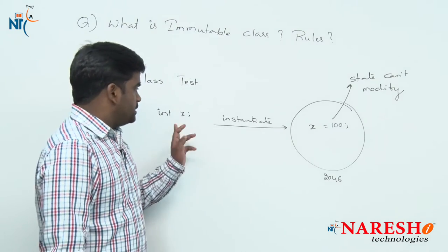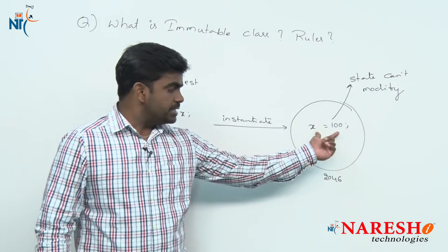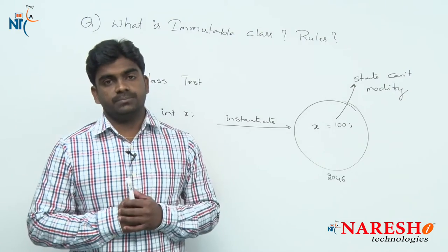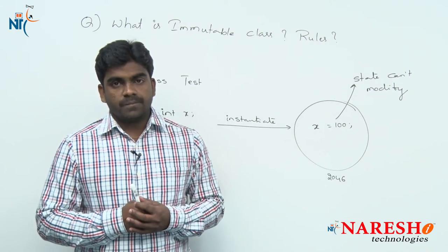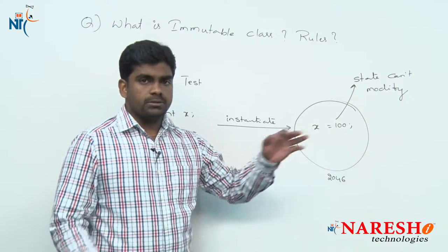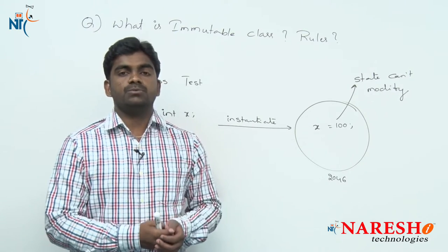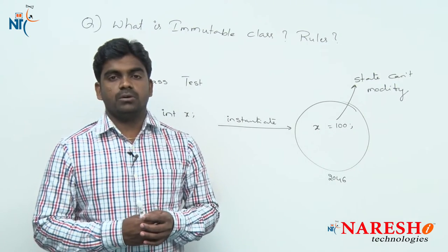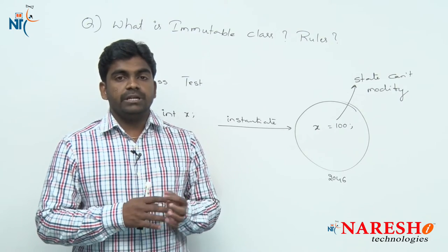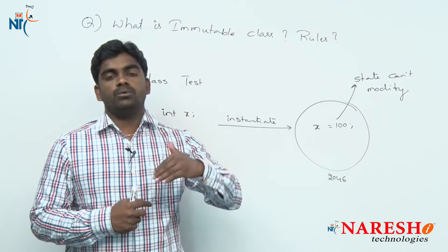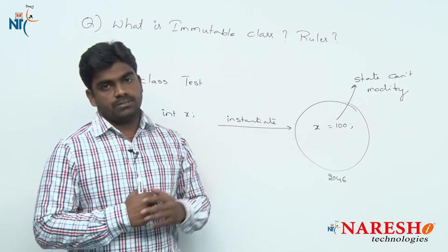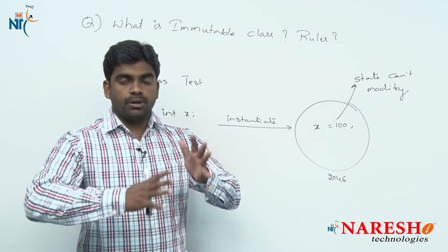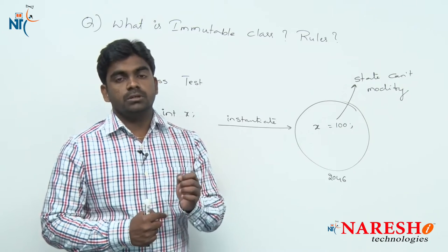Once an object has been created, the state — meaning property values, nothing but variable values — cannot be changed; it is fixed. So how can we control this? Generally a variable, the name itself says it is varying, it is changing. But how can we control it? Very simple — we need to check how many rules we have to follow. To define an immutable class, either user-defined or predefined, it will follow a set of rules.